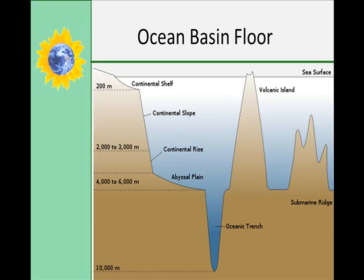Seamounts are submerged volcanic peaks that dot the ocean floor — volcanoes that have never reached the surface of the ocean. They tend to be steep-sided, cone peaks. Guyots are formed once an underwater volcano reaches the surface and the plate moves the volcanoes away from the hot spot. The volcanoes dive and begin to erode. Once the volcanoes erode to the surface of the ocean, they become atolls or guyots. Guyots are considered once-active, now-submerged, flat-topped volcanoes.